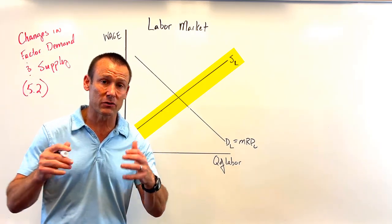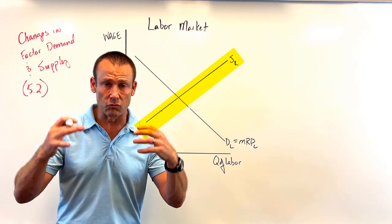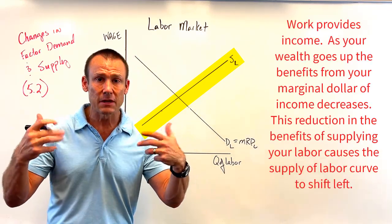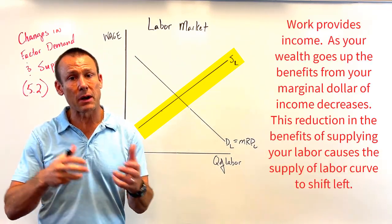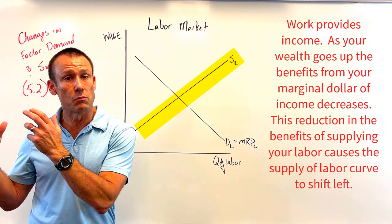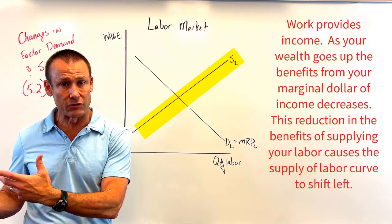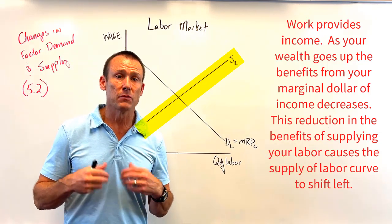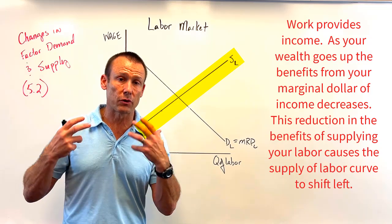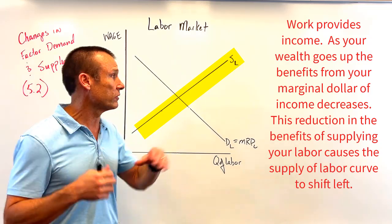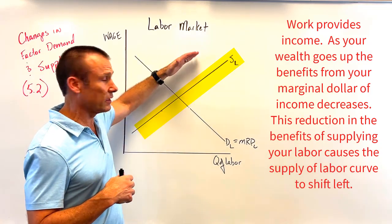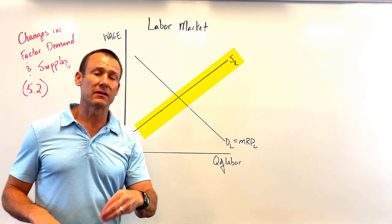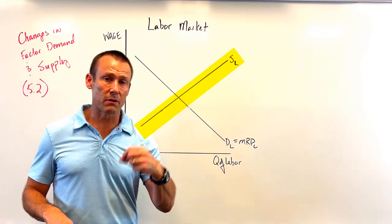Next is wealth. If wealth changes, this has a lot to do with leisure. If all of a sudden wealth goes up — say we see really large stock market gains — people are probably going to decide to do more leisure. The benefits of working are going down as their wealth goes up, so an increase in wealth should see a decrease in the supply of labor.